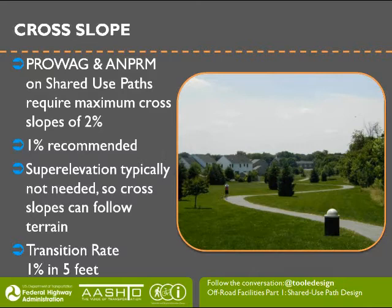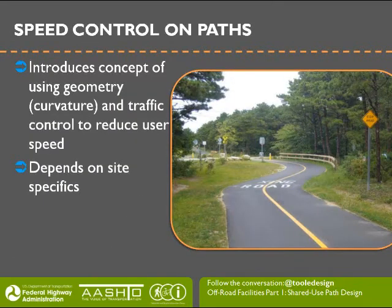When transitioning cross slopes—whether due to changing surface drainage conditions or tying into an existing cross slope—the guide recommends a transition rate of 1% per 5 feet as a comfortable transition rate. The concept of speed control on paths allows designers to use a lower design speed and set up geometry or traffic control to slow path users, such as approaching a hazard or a crossing. This is a very site-specific application requiring careful thought, as you don't want to create a hazard by placing a slower design speed section, but in some situations slowing path users is desirable.